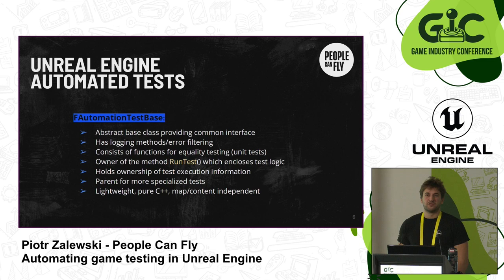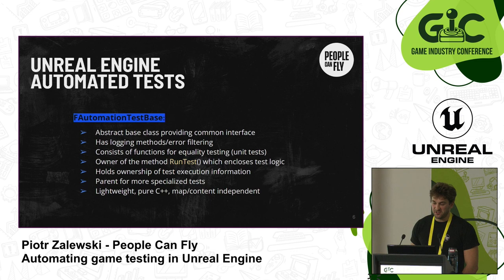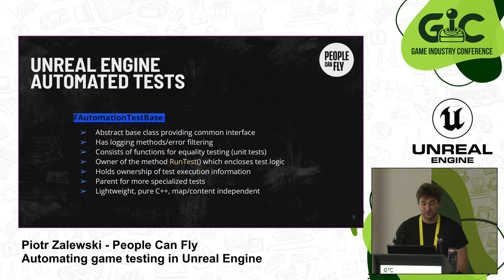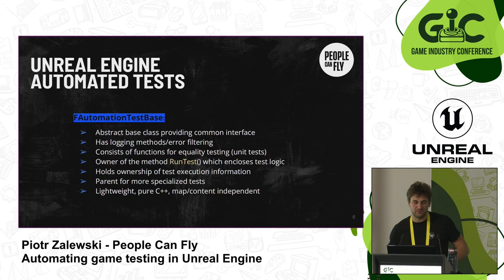All test types are derived from one common ancestor called FAutomationTestBase. It's an interface class which provides you with a common interface to write your tests, and each test is able to use its interface. Moreover, we have some logging methods which are quite useful because, compared to regular Unreal logging, they have the advantage that if you use logging from your test, it will write the precise line from which the error or information is being logged. You can also filter errors or information that you don't need to see, so they won't pollute your log.